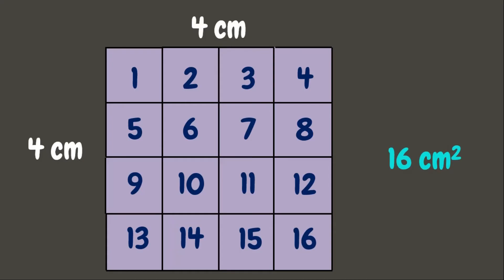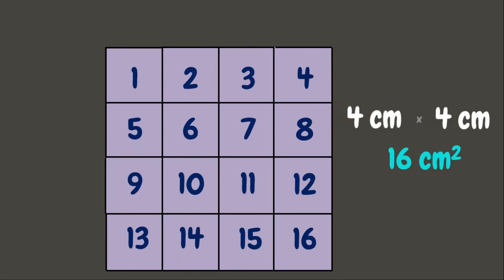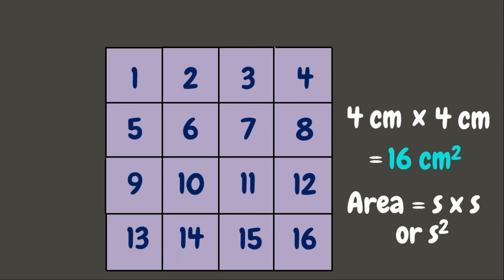The area is sixteen square centimeters. We can observe that if we multiply four centimeters by four centimeters, we get sixteen square centimeters. It means that the formula to get the area of a square is side times side, or s times s, or s².